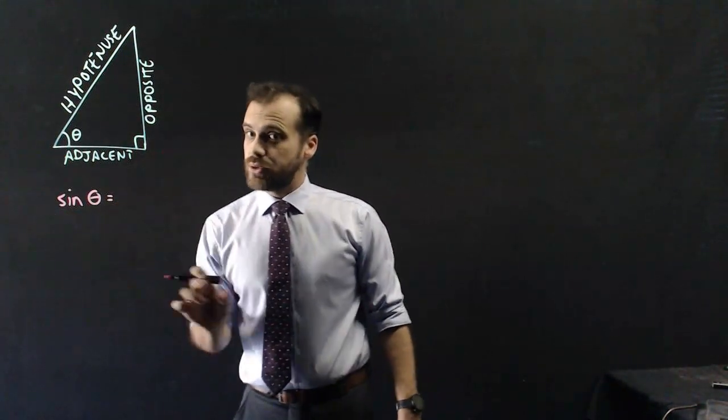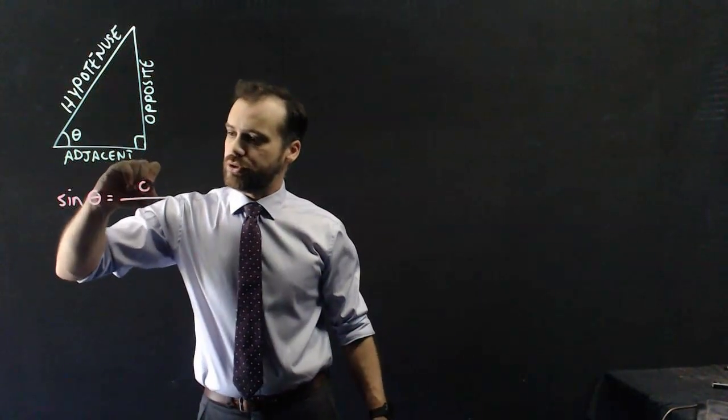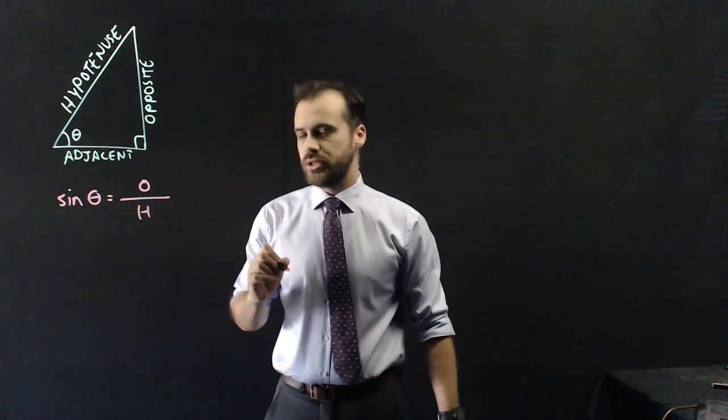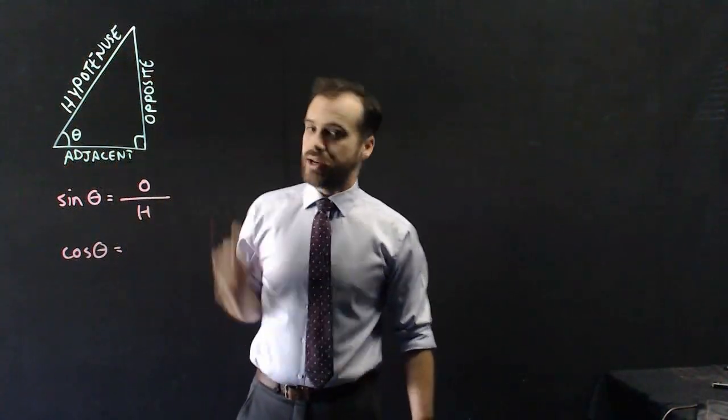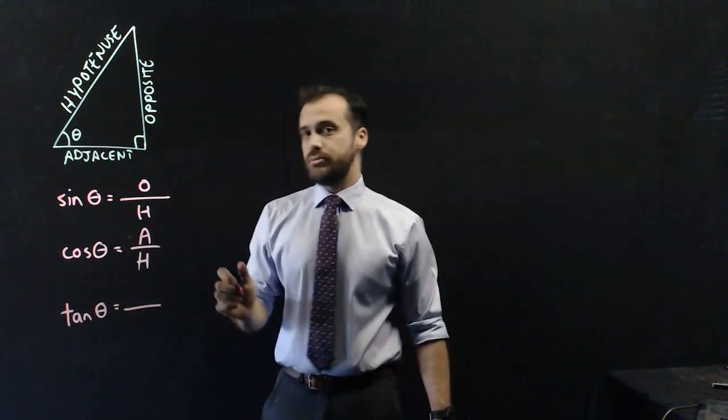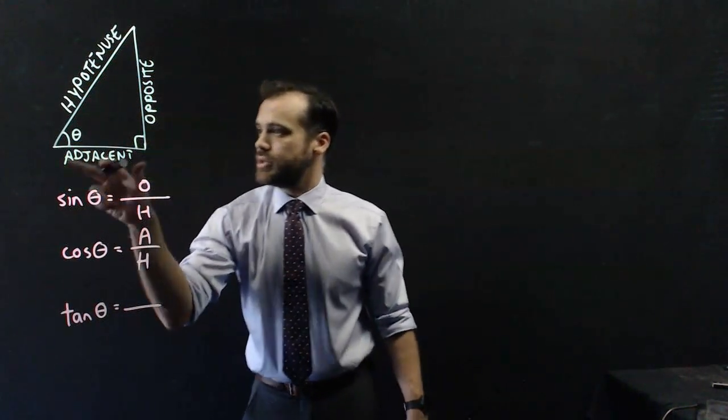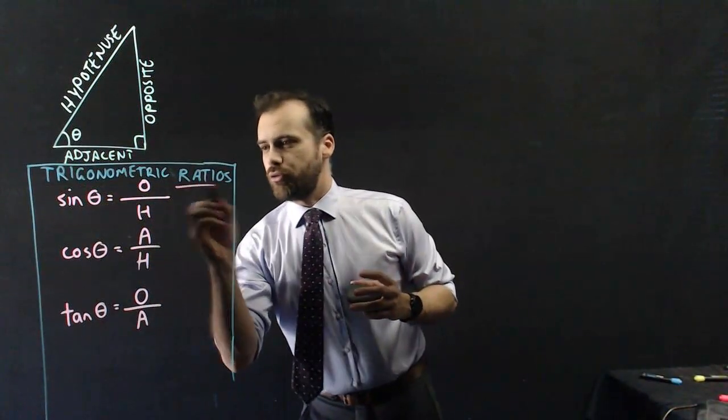They are ratios between two sides. Sin theta is equal to the ratio of opposite to hypotenuse, O over H. Cos theta is the ratio between adjacent and hypotenuse. And finally, tan theta is equal to the ratio between opposite and adjacent. These are your trigonometric ratios.